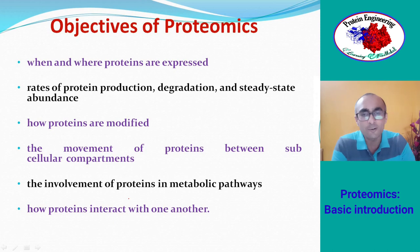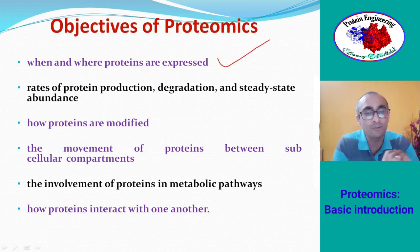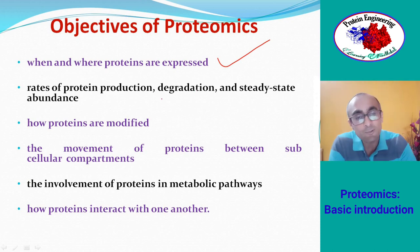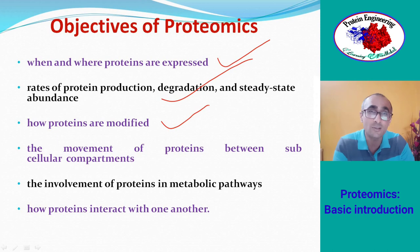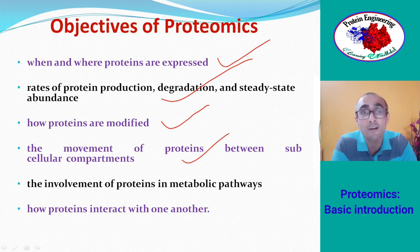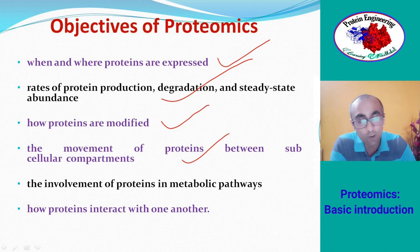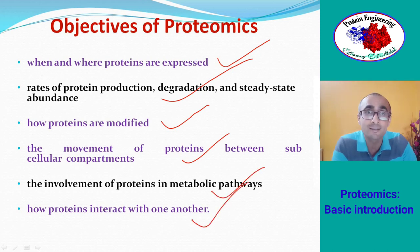The objectives of proteomics include determining when and where proteins are expressed, the rate of protein production and degradation, how proteins are modified, and the movement of proteins between subcellular compartments. It also covers the involvement of proteins in metabolic pathways and how proteins interact with one another.